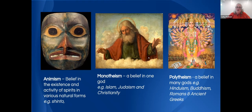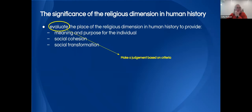Monotheism is a belief in one God. Our three traditional religions — Islam, Judaism and Christianity — all have adherents who believe in one God. Polytheism is a belief in many gods; the Hindu religious tradition, Buddhism, the Romans and the ancient Greeks all worshipped many gods. You may also have gone into specific historical examples of each of these three groups.